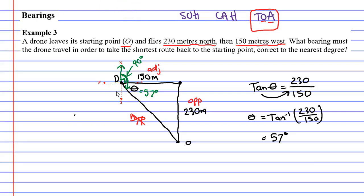So what we're going to do is we're going to add these two angles together. 90 degrees plus 57 degrees equals 147 degrees.